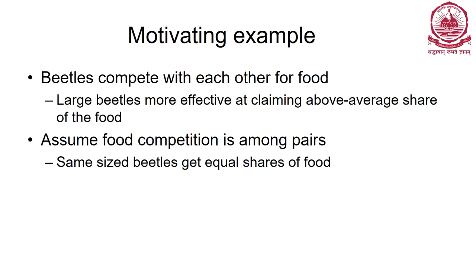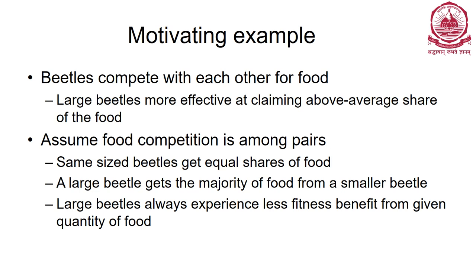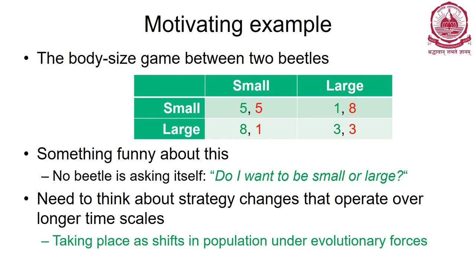Same-sized beetles get an equal share of food. Large beetles get the majority of food from small beetles, but large beetles still don't show good fitness because of their expensive metabolism - they still need more from the given quantity. Formulating this as a game: small vs. small - equal share; large vs. large - equal share but less due to fighting; small vs. large - large gets majority. Player one is either small or large, but cannot choose - it is determined by body nature or mutation.